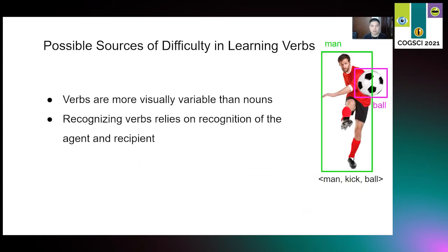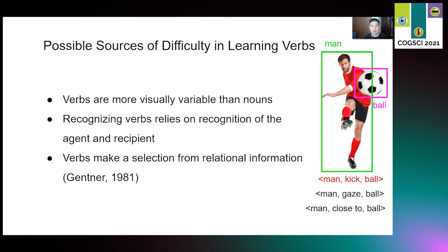Another natural difficulty in learning verbs is that in order to know the meaning of a verb, you have to know the meaning of the agent and the recipient. Let's take the man kicking the ball example on the right. In order to know what kick means, you have to have some prior knowledge on what is a man and what is a ball. The third point is that according to Gentner's natural partition hypothesis, concrete nouns are easy acquisition because they are mapped onto visual categories of individual ball concepts, while verbs make a selection from the variable relational information. There are actually multiple relations embedded in this picture. The man is kicking the ball for sure, but also the man is getting at the ball, and the man is close to the ball. Which kind of relation does the word kick refer to? This kind of ambiguity may also give rise to the difficulty in learning verbs.